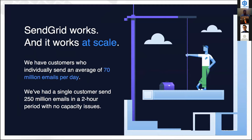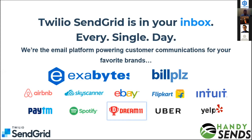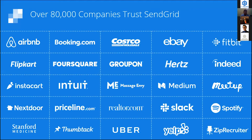SendGrid works at scale — we send around 70 million emails per day. One of our customers sends 250 million emails in a two-hour period with no capacity issues. Our biggest customers in the South Asian and US regions include Exabytes, Billease, Airbnb, eBay, Flipkart, and Uber. Overall, 80,000-plus companies use SendGrid, with a few shown on screen.